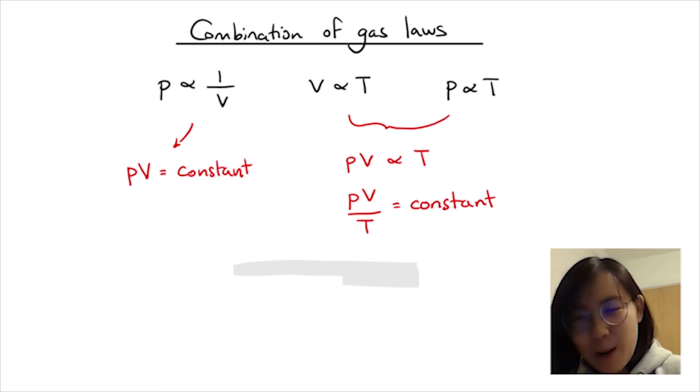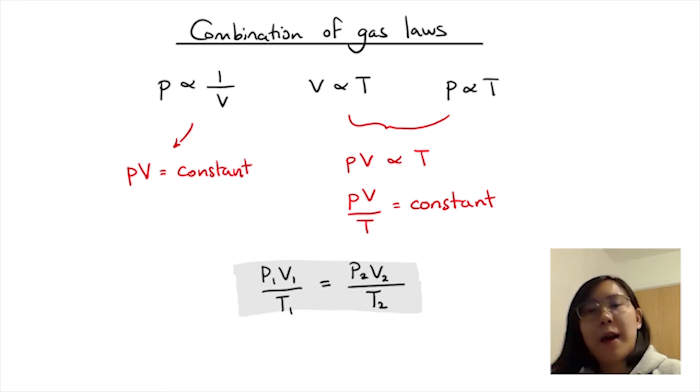So after all the hard work, we now have arrived at this gigantic combined gas law. That's P1V1 over T1 equals P2V2 over T2. So that's the combined gas law.